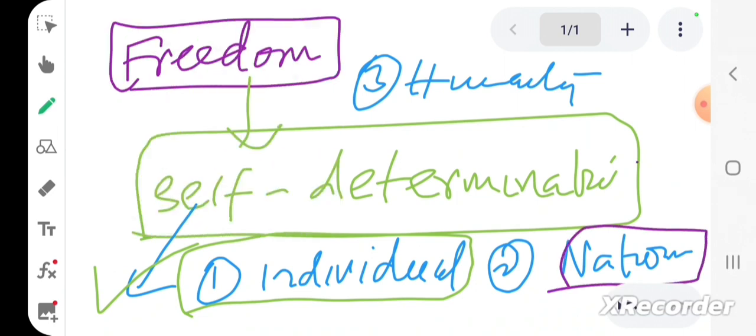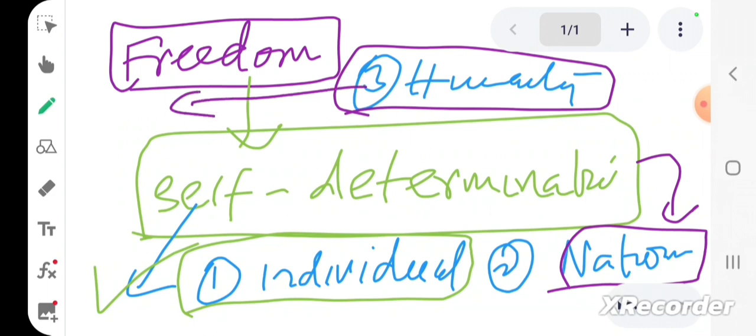claim this right of self-determination at the level of nation, so you can have national capitalism, or you can claim this right at the level of humanity, so that would be humanitarian or humanistic capitalism.